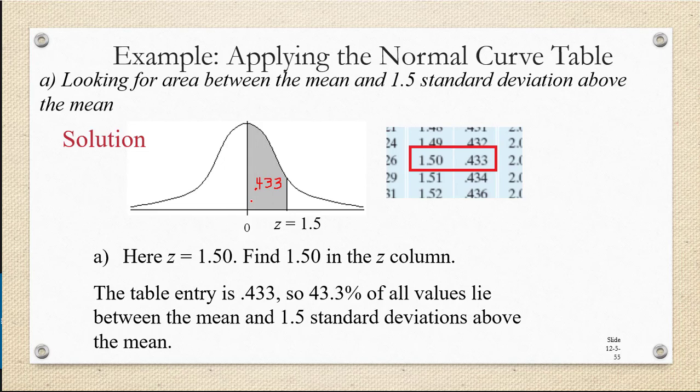Remember, our z-table always gives us the area between the z-score of 0 and the z-score we're given.